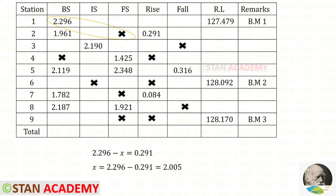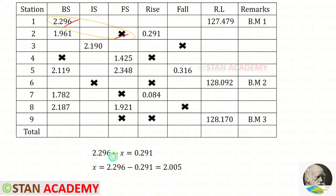First we need to take from this back sight to this fore sight. This reading minus this reading — we have got rise, so that it is positive. Let us keep this value as x. So 2.296 minus x will equal positive 0.291. We can take minus x to the other side so it becomes positive, and take the other value to the other side so it becomes negative. In this way, for x we will get 2.005.